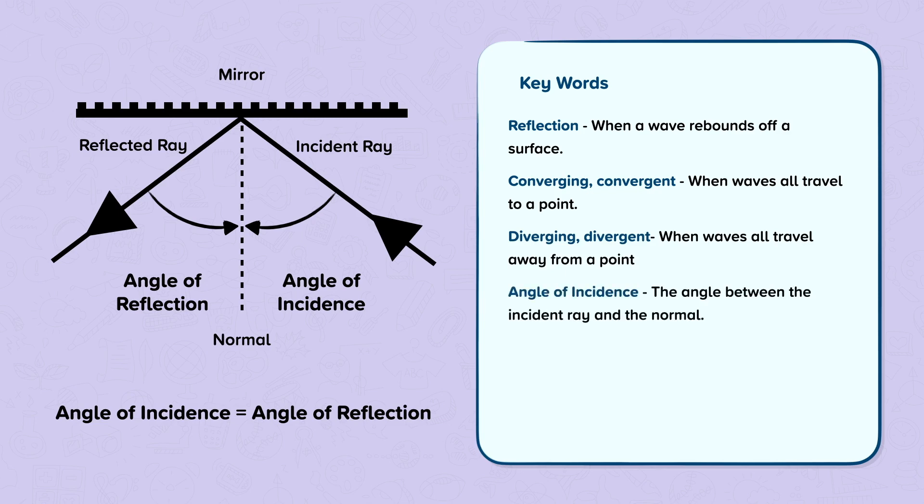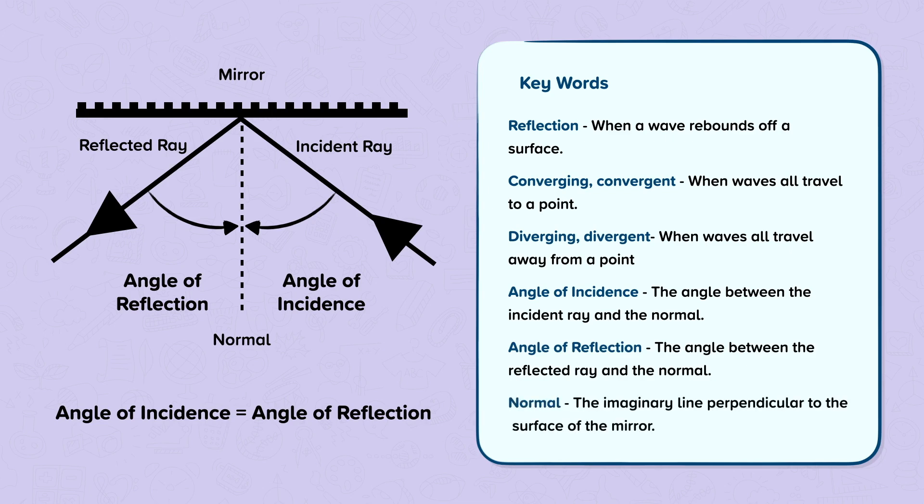Angle of incidence, the angle between the incident ray and the normal. Angle of reflection, the angle between the reflected ray and the normal. And normal, the imaginary line perpendicular to the surface of the mirror.